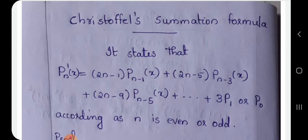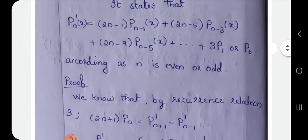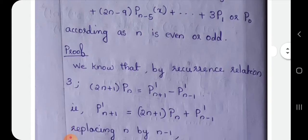The proof uses the third recurrence relation. The third recurrence relation is: (2n+1) Pn equals Pn+1 dash minus Pn-1 dash. That is, Pn+1 dash equals (2n+1) Pn plus Pn-1 dash.